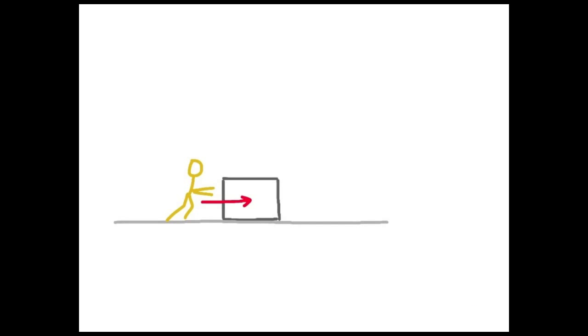Consider the example where we're pushing a box along the ground. It displaces a displacement, S, and we're pushing it with constant force, F. If the box moves at constant velocity, we know there must be an equal and opposite force, the force of friction in this case, opposing the applied force.